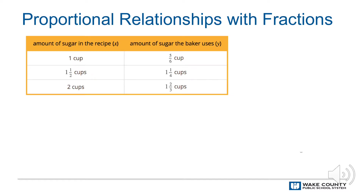Students will be learning about proportional relationships that involve fractions and decimals. For example, a baker decides to start using one-sixth less than the amount of sugar called for in each recipe. If the recipe calls for two cups of sugar,